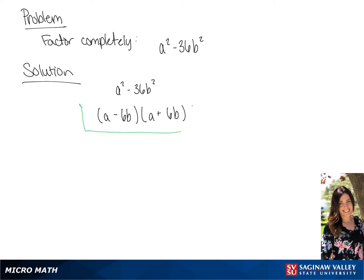So fully factored, we get a minus 6b times a plus 6b.